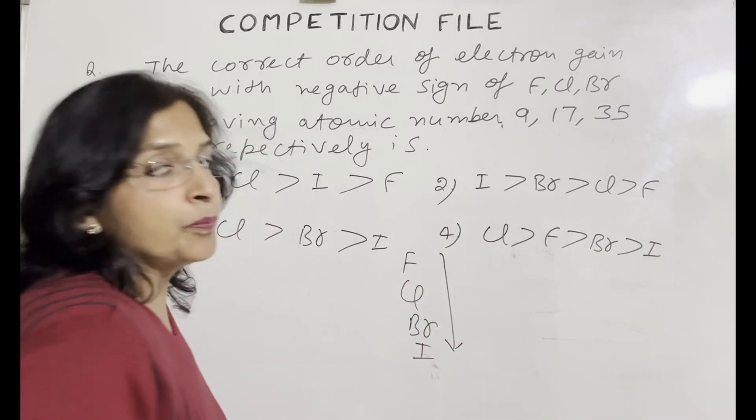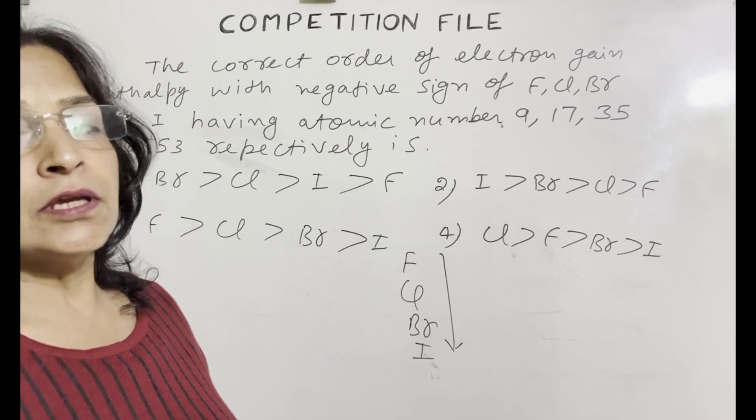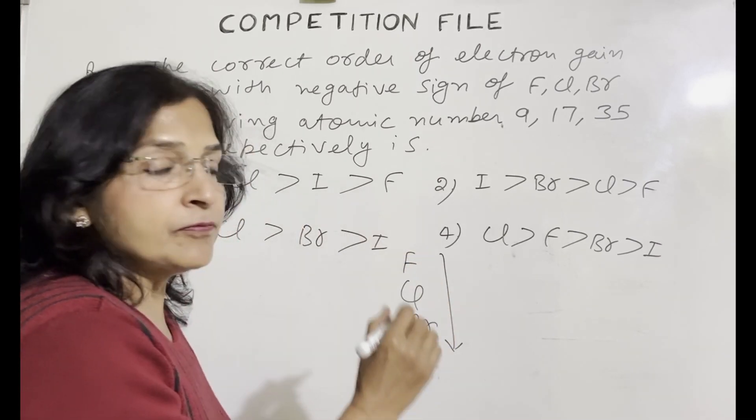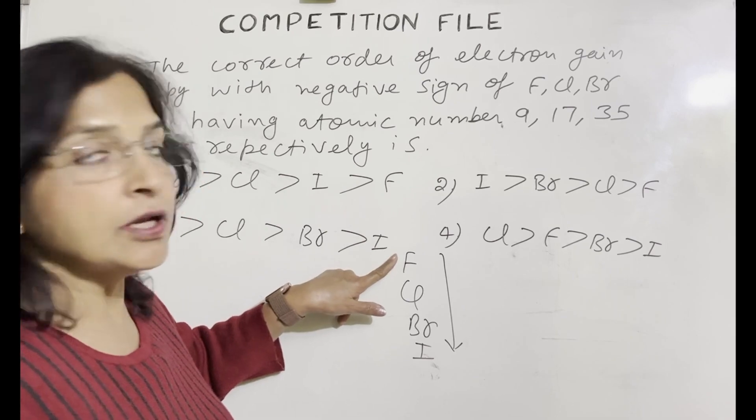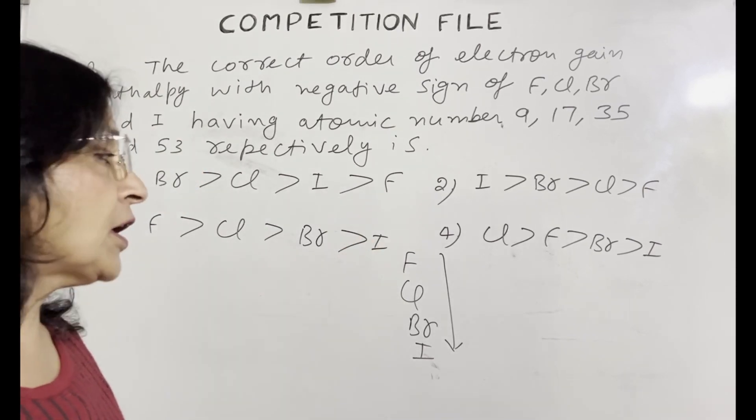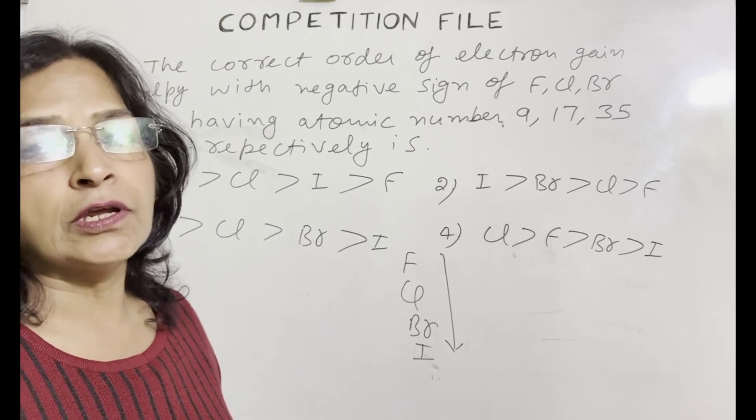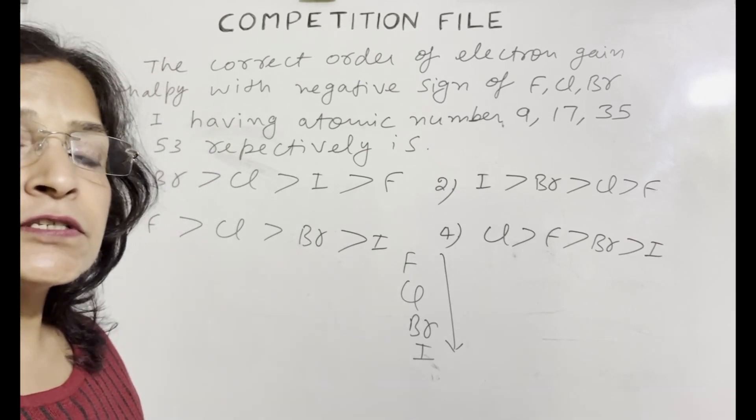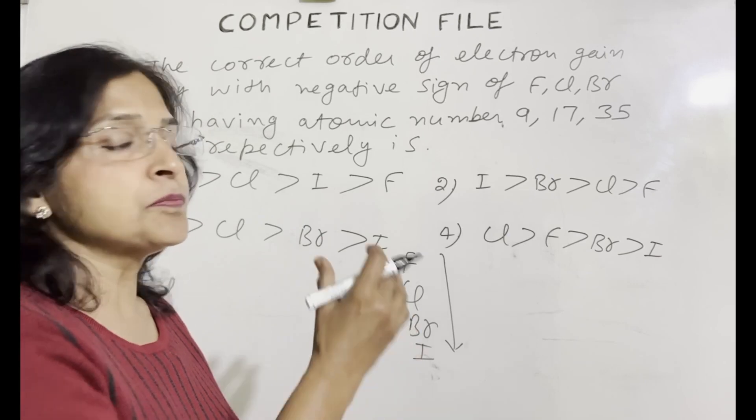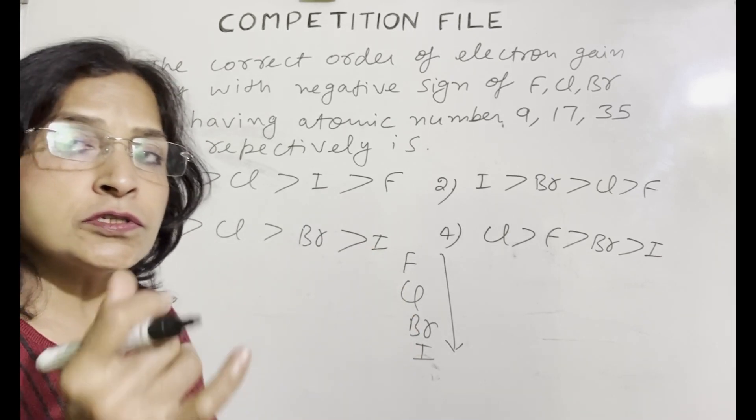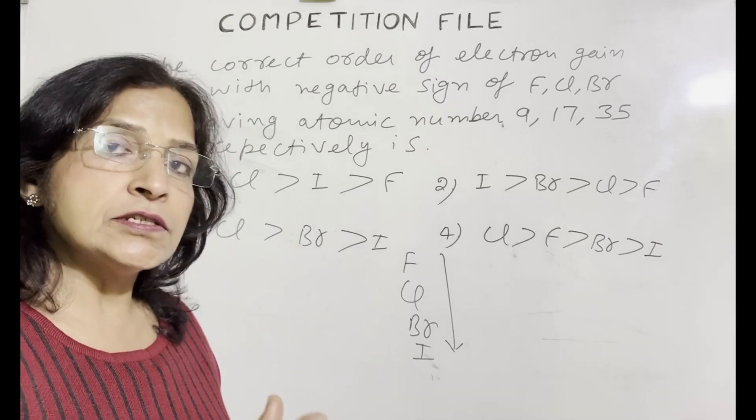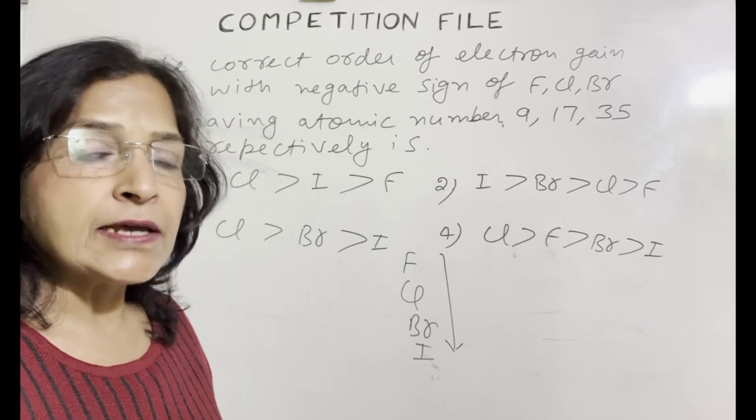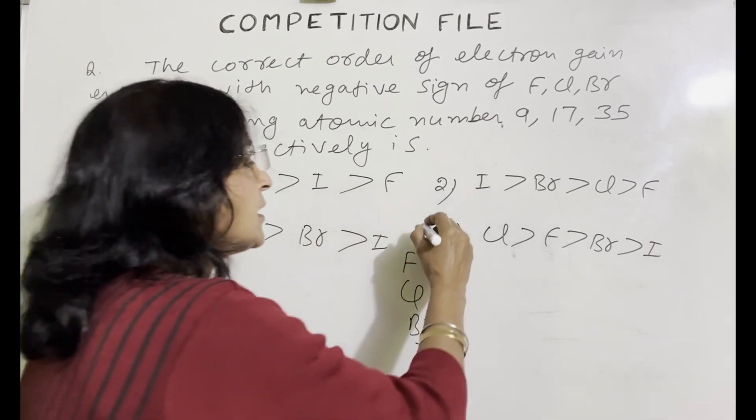As we move down the group, electron gain enthalpy tendency to accept the electron decreases. So as we move from fluorine to chlorine, electron gain enthalpy, fluorine's should be higher. But the electron gain enthalpy of chlorine is more than fluorine. Due to the small size of fluorine, incoming electron experiences force of repulsion with the electrons present in the energy shell. To overcome that repulsion, some part of that released energy is used. So the released energy is less than expected value. So choice will be number 4.